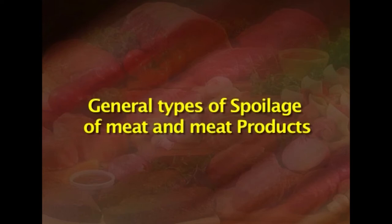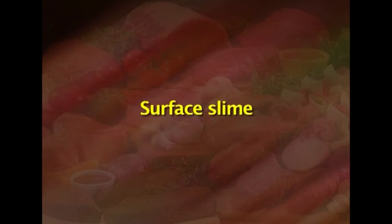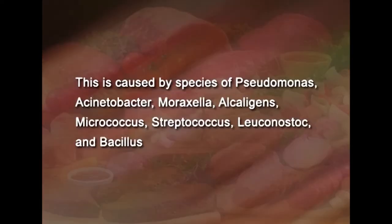Looking at the general types of spoilage of meat and meat products, the first is surface slime. This is caused by species of Pseudomonas, Acinetobacter, Moraxella, Alcaligenes, Micrococcus, Streptococcus, Leuconostoc, and Bacillus.